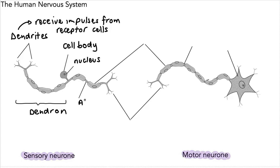On the other side we have the axon, and at the end we have what's called the axon terminals — the end of the axons. We find axon terminals also on our motor neuron at the end of the axon.